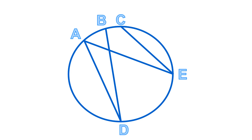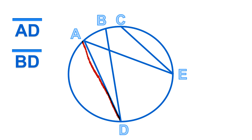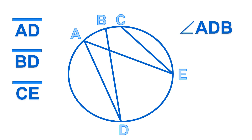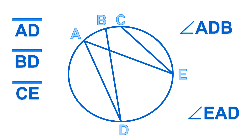Let's have an example. Line segment AD is this part of the circle, line segment BD is this part of the circle, and line segment CE is this line segment here. For angles: Angle ADB is located here, with D as your vertex. Another example is Angle EAD, where angle A is your vertex.